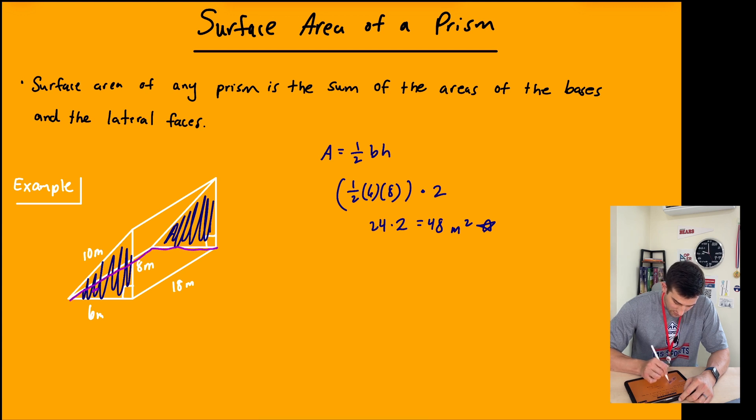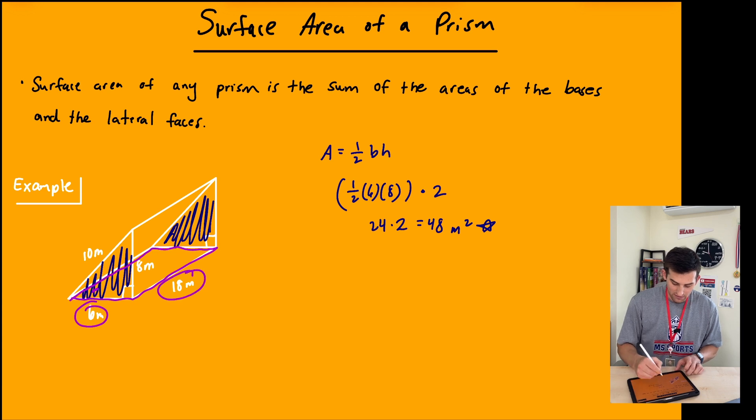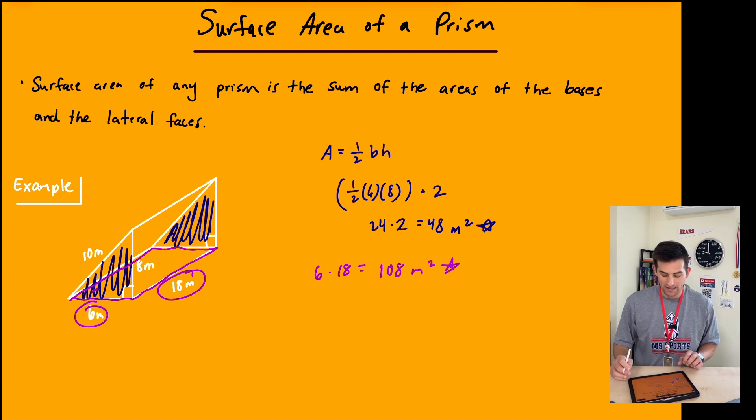I'll outline it right there. For this we see that the width is six and the length is 18. So we do six times 18, which gives us the area of that bottom face: 108 square meters. Another star by that.